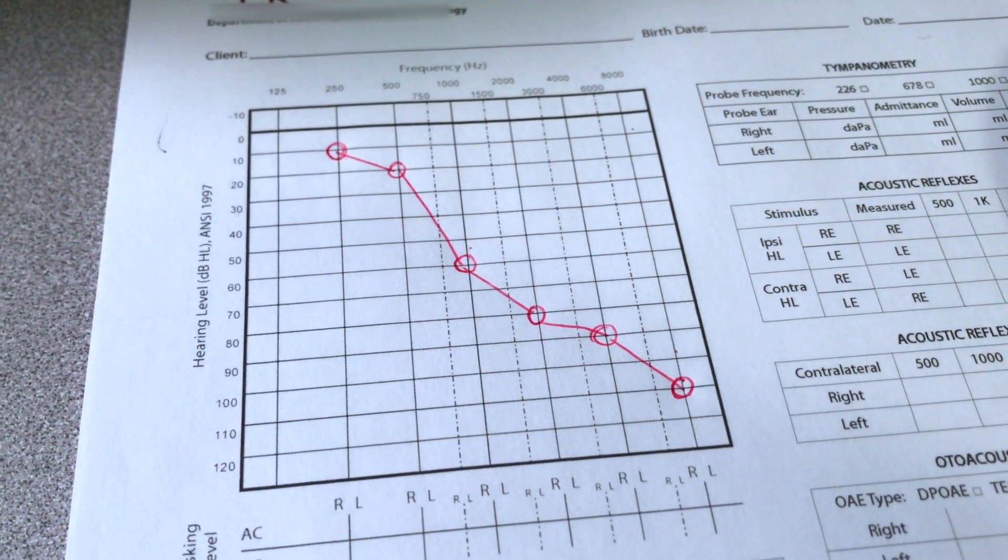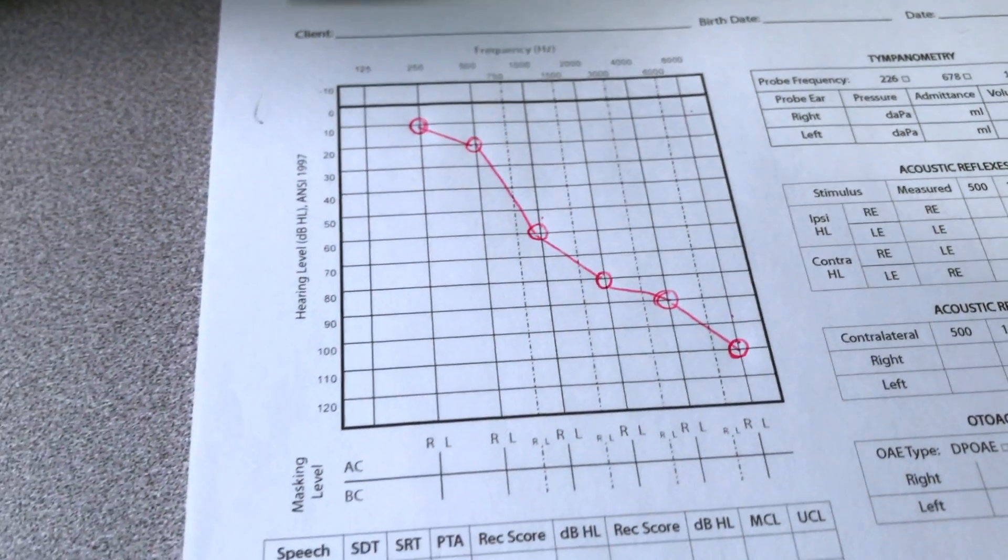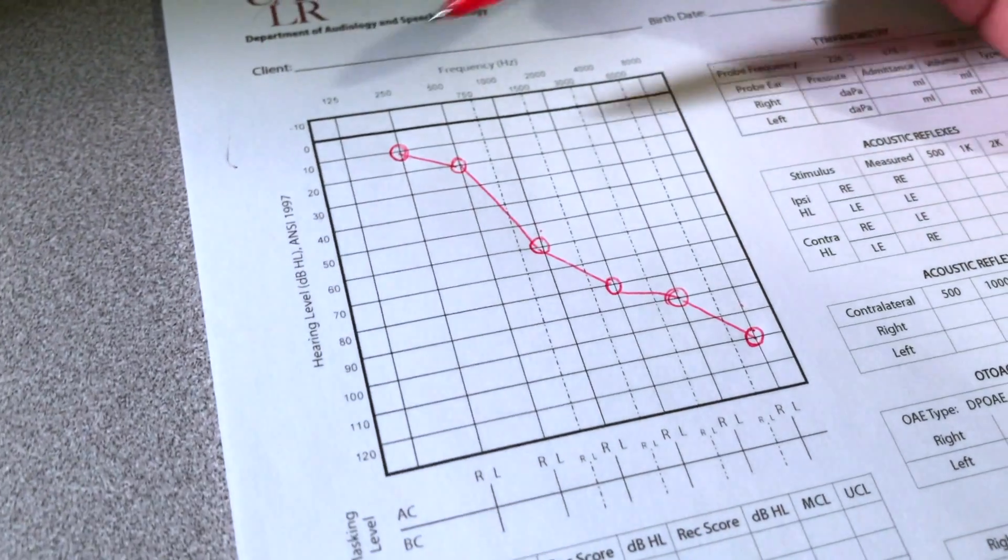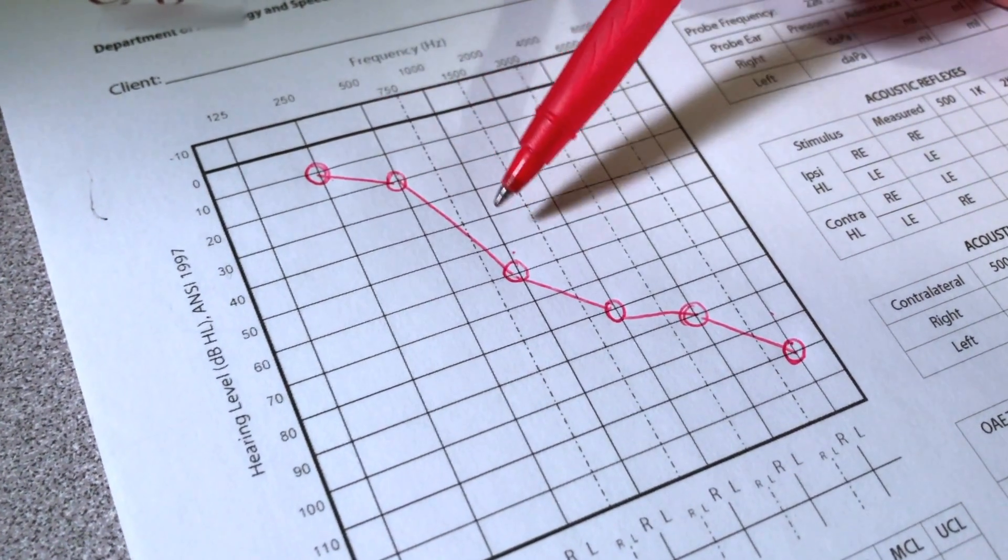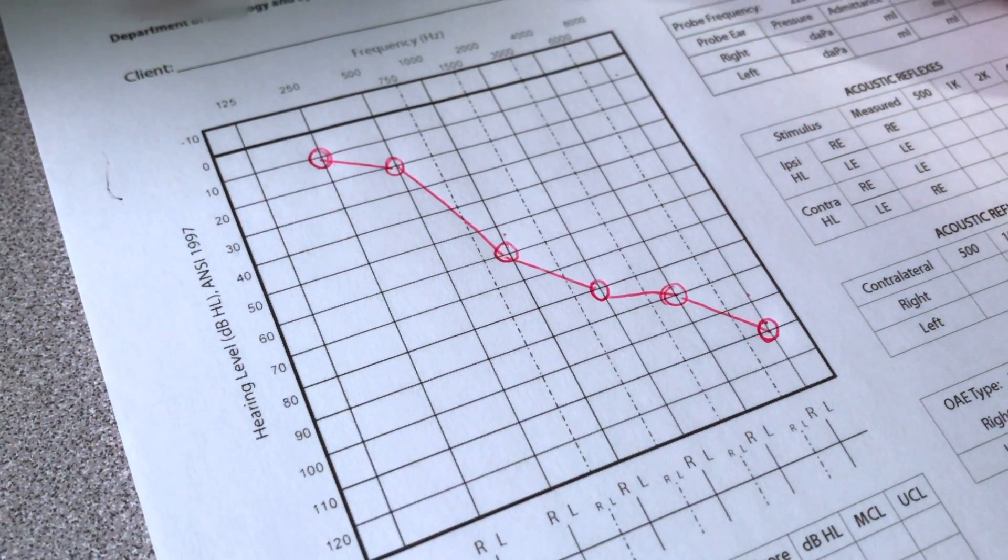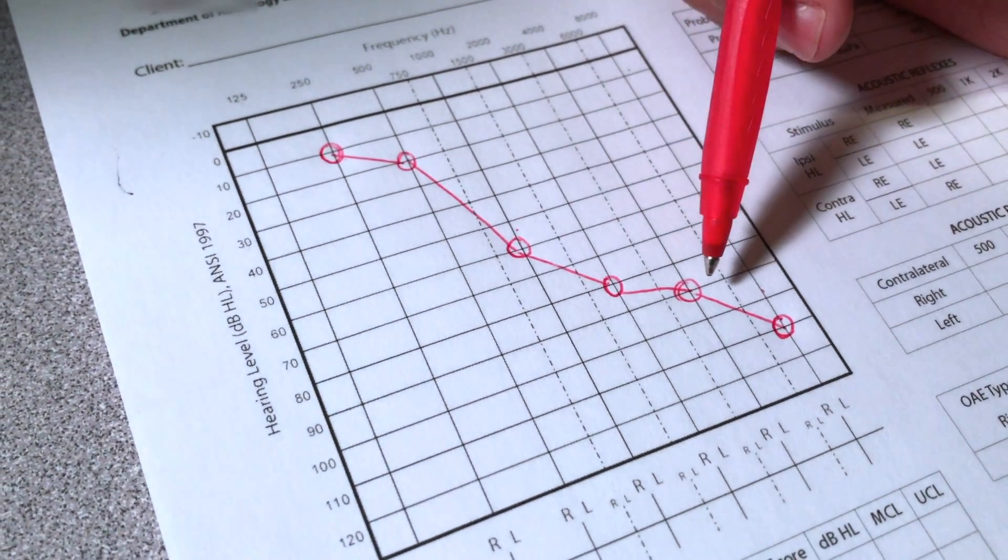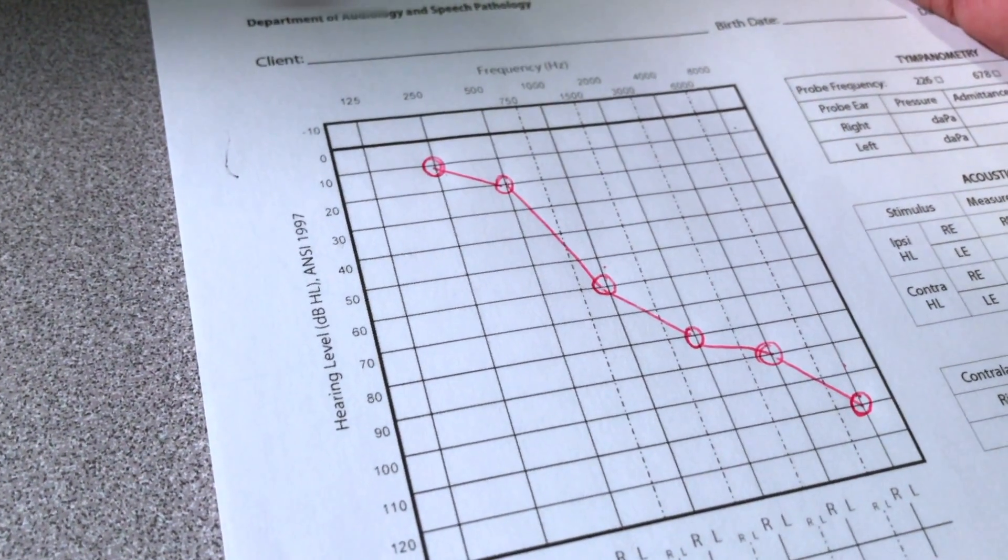This video is about how to perform a TEN test. Before you do the TEN test, first measure the person's audiogram. Here is an example audiogram where the person has a steeply sloping sensorineural hearing loss. We are suspecting the person might have a dead region at 4000, 2000, and 1000 Hertz.